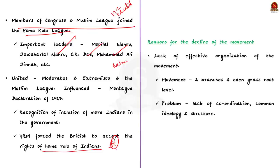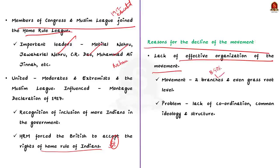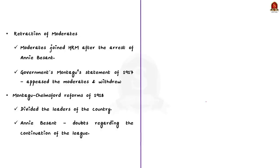Coming to the second part — the reasons why the movement declined in 1919. First, the lack of effective organization: the movement had two branches that subdivided to grassroot levels, but the problem was lack of coordination, common ideology and structure, as was evident from the later success of Gandhian movements like the Non-Cooperation Movement. Second, retraction of the Moderates: the Moderates joined the Home Rule Movement after the arrest of Annie Besant, but when the government announced the Montague Statement of 1917, the Moderates were appeased by the reforms and withdrew.